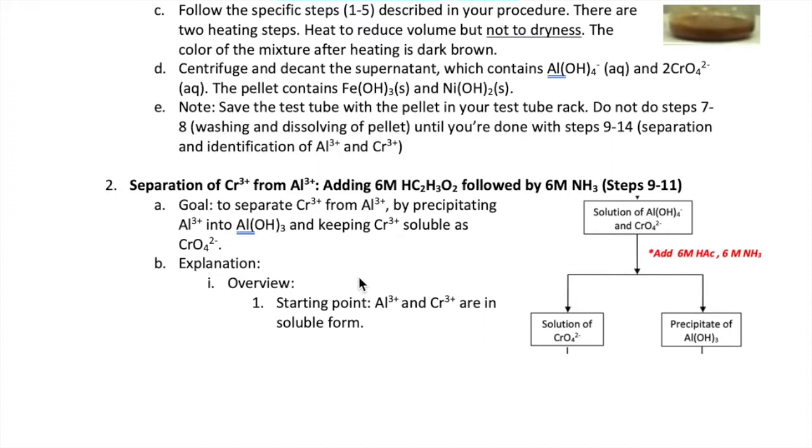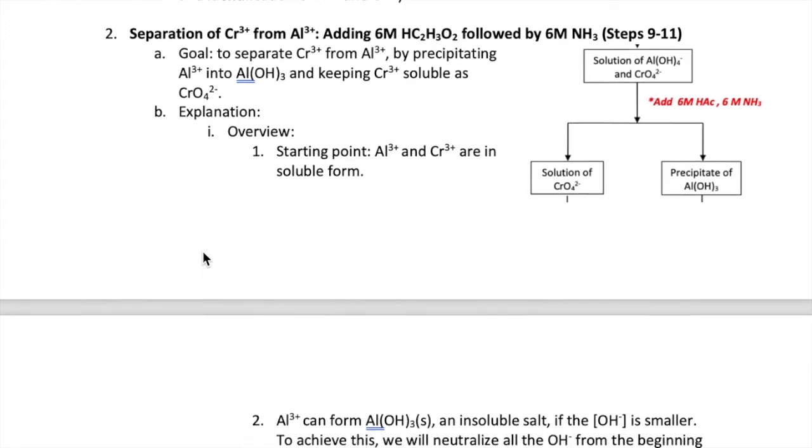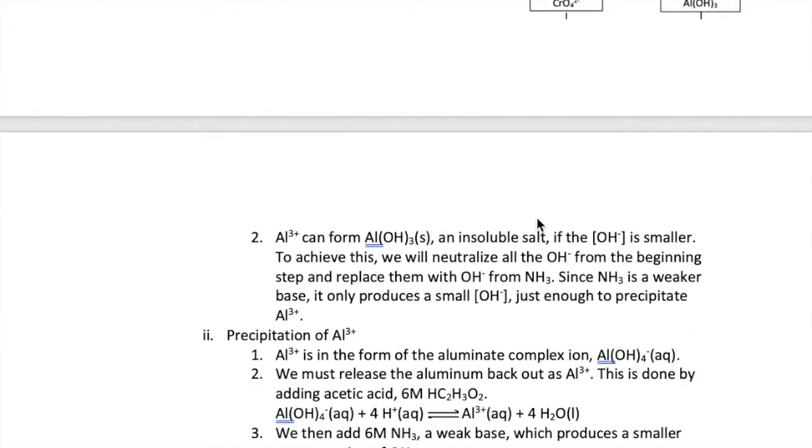We will separate the two ions by precipitating aluminum and keeping chromium soluble as the chromate ion. Now how do we precipitate aluminum? Well it turns out that aluminum reacts with hydroxide in two different ways. At high concentration of hydroxide, aluminum forms a complex ion. This is the aluminate ion that we discussed in video 1.